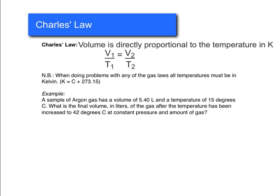Alright, so the example we have here is a sample of argon gas has a volume of 5.40 liters and a temperature of 15 degrees Celsius. What is the final volume in liters of the gas after the temperature has been increased to 42 degrees Celsius at constant pressure and amount of gas? Alright, so we have our initial volume is equal to 5.40 liters. Our initial temperature is 15 degrees Celsius, but we need to add 273 to that, so that gives us 288 degrees Kelvin. Our final volume is what we're trying to find, so our V2 we're just going to call X. And our final temperature is going to be 42 degrees Celsius, but again, we need to convert that to Kelvin, so that's 315 degrees Kelvin.